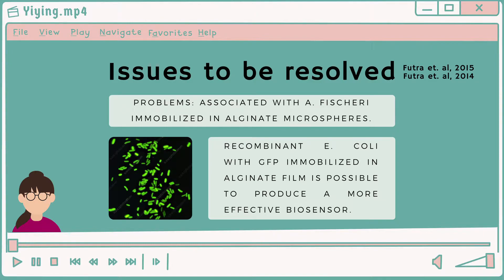These problems are associated with the immobilization methods, which involve bacteria immobilized in alginate micro-beads by micro-encapsulation and supported with a cellulose nitrate membrane. Hence, an alternative immobilization method involving recombinant E. coli with GFP immobilized on the cellulose nitrate membrane and covered with alginate films is possible, forming a more effective toxicity biosensor with lower LOD, lower EC50, and shorter response time.